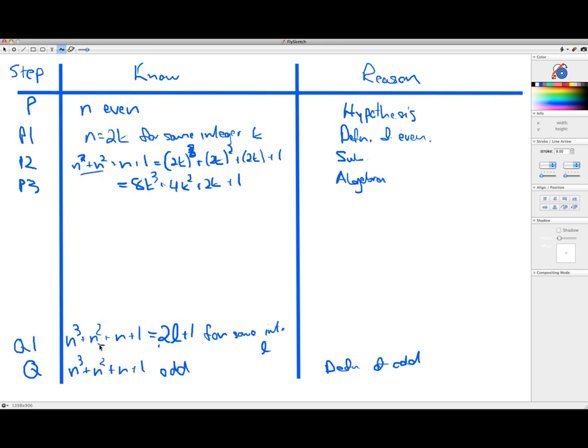And now keep in mind where we want to end up. I want to end up with all this stuff. Here it is. I want this to be 2 times an integer plus 1. So I got the plus 1 part going for me. And I think I see the 2 times part going for me as well. Let me factor out the 2 here. And I got 2 times 4k cubed plus 2k squared plus k plus 1. And that's, again, algebra. You can say algebra. You can say factoring. Either way, that nails that step. That's why that's true.